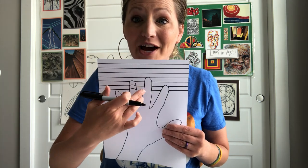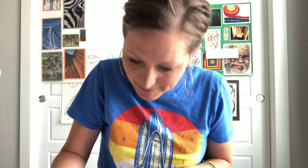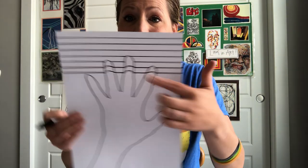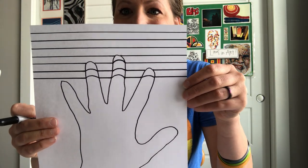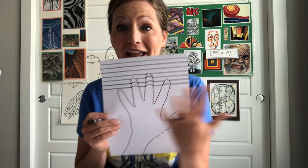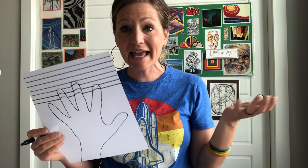You make the bump going all the way down — bump, bump, bump, straight and bump again. I missed a bump right here at the top — there we go. You're going to do that all the way down your page. When you're done it's going to look like your hand is sticking right out of your page!